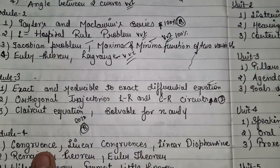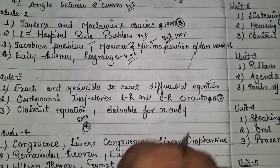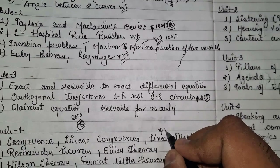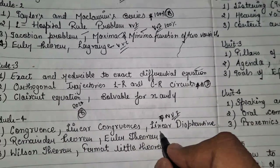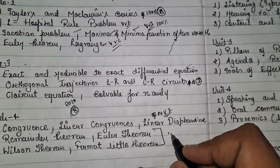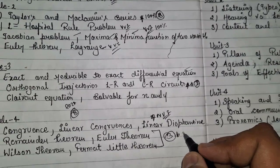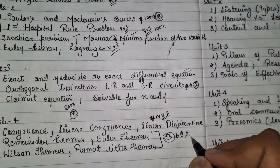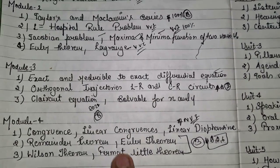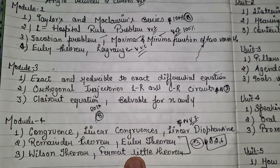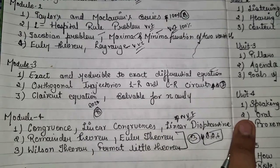Module 4 covers congruence, linear congruence, and related topics — three very important topics. The Remainder theorem, Euler's theorem, Wilson's theorem, and Fermat's little theorem are the four key theorems. Each theorem may have questions worth 6 to 8 marks. There is a 100% chance questions will come from Wilson's theorem and Fermat's little theorem.